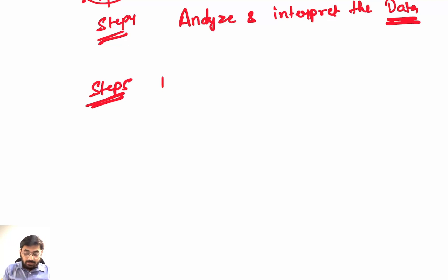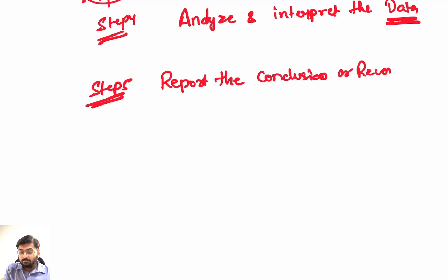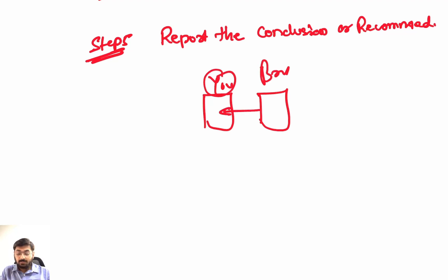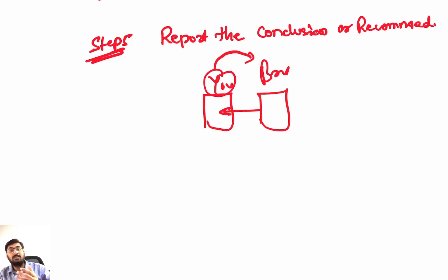Step five is to report the conclusion or any recommendation. You have prepared all the research. Suppose it's you and your brother — you know you cannot buy the phone yourself, so you share all the conclusions and recommendations with your brother so he can purchase the phone for you, based on better battery life or fit for budget. Similarly, as a financial analyst, you will prepare a report with your findings and give a recommendation on whether to invest in this company or avoid it. Follow all ethical standards when creating financial statements and conclusions.